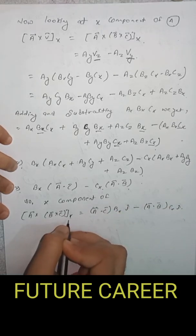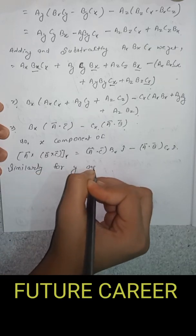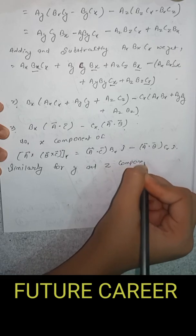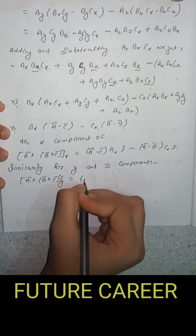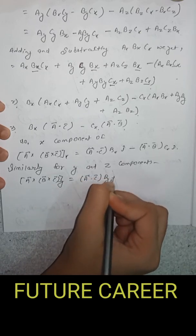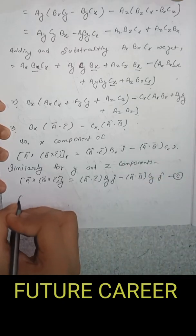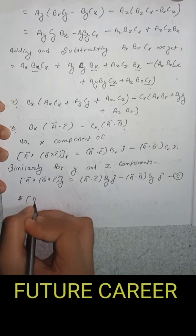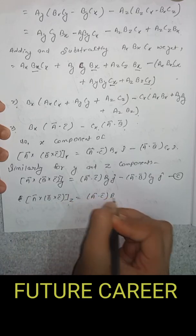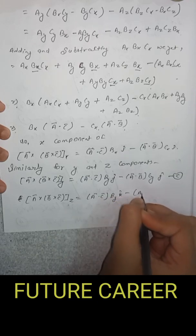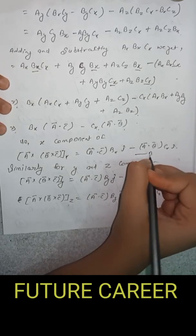Similarly, for the Y component: A cross B cross C Y equals A dot C into By j cap minus A dot B into Cy j cap — equation C. For the Z component: A cross B cross C Z equals A dot C into Bz k cap minus A dot B into Cz k cap — equation D.